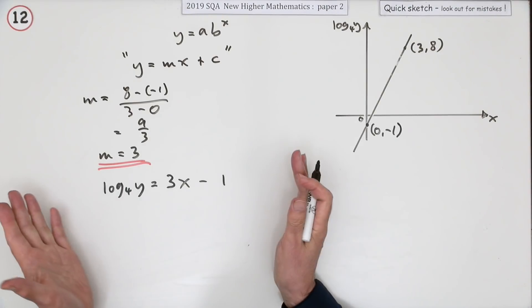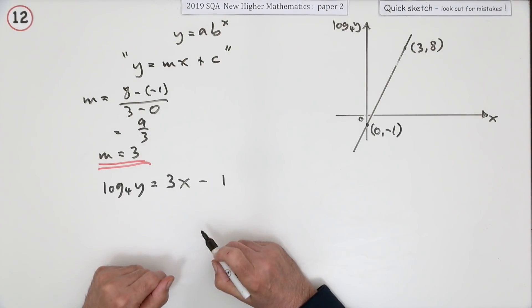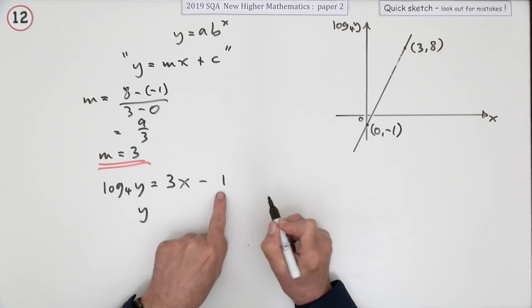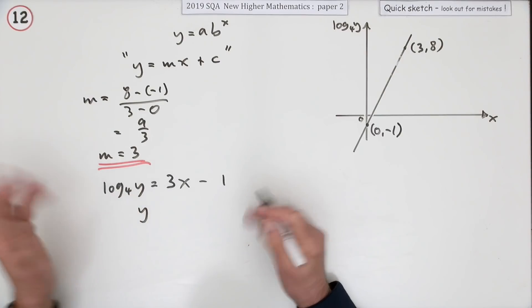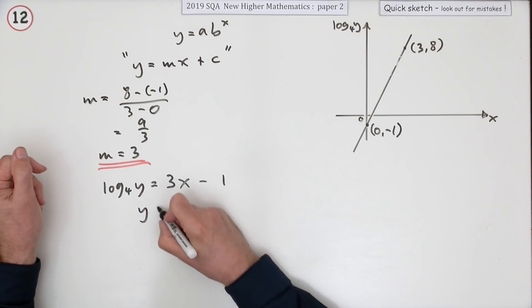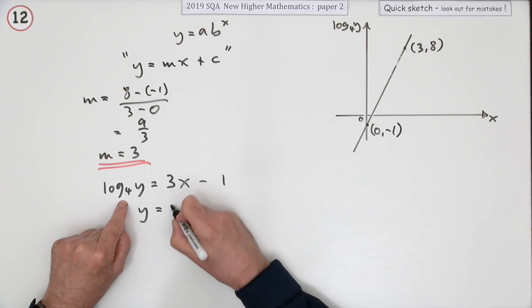That'll be a mark. Now you've just got to rearrange it to read y equals. There are several ways. I'm just going to do it one way here. You could, for instance, rearrange that to be log base 4 of something. I'm just going to leave it like this and do inverse of log base 4, which is 4 to the power 3x - 1.